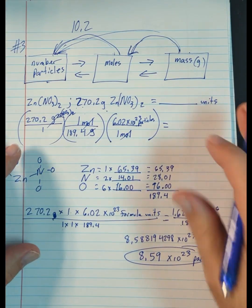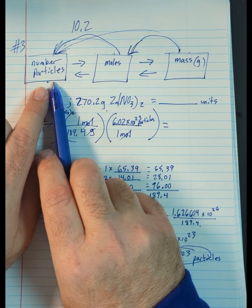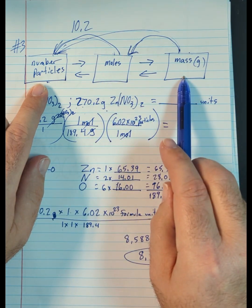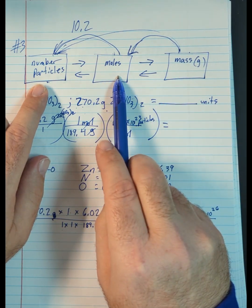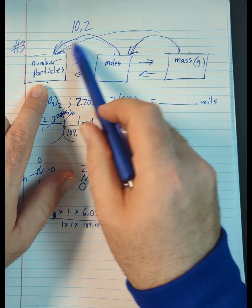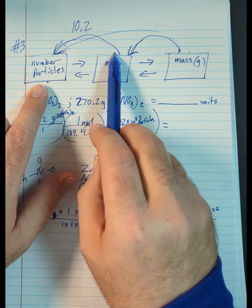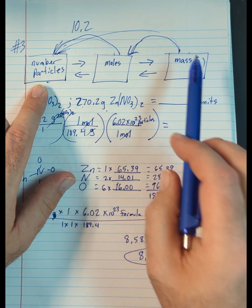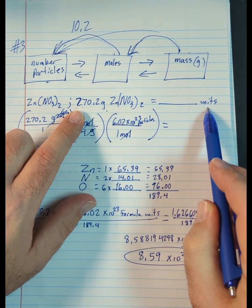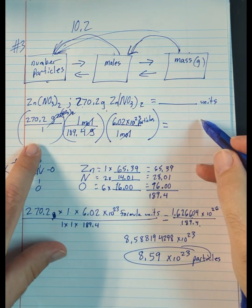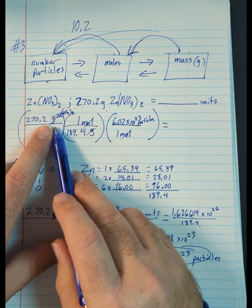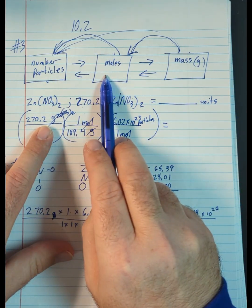With number 3, we've realized we can go from the number of particles to moles, from moles to mass, or mass to moles, or moles to number of particles. We can also go from mass to moles to number of particles, or from number of particles to moles to mass. In this problem they give us the mass and we want to know how many formula units there are. So we start with grams — our first mission is to get rid of those grams by converting from grams to moles.